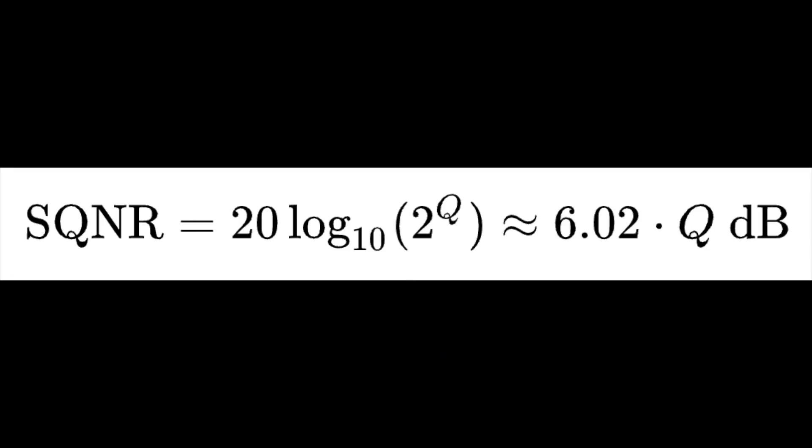Now bit depth doesn't just tell us how much information is being captured and how accurate that information is — it also has a direct impact on signal to noise ratio. So when your interface or A to D converter is quantizing the analog signal to its closest digital value, it's not just quantizing, but it's also adding in noise. And the noise that we're adding in is called signal to quantization noise.